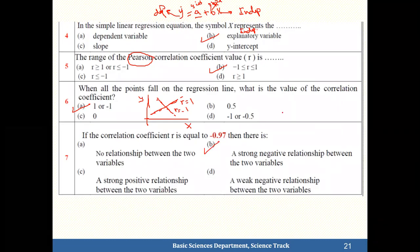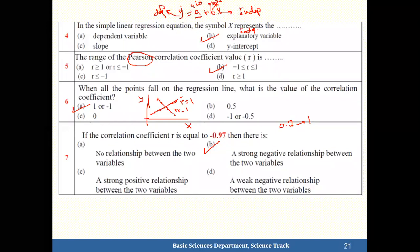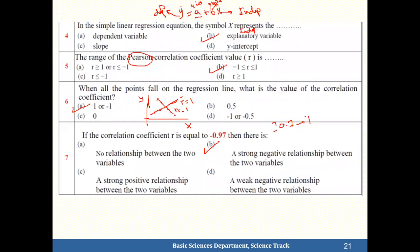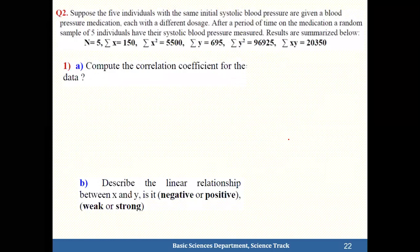Remember: from 0.7 to 1 (positive or negative) the relationship is considered strong.